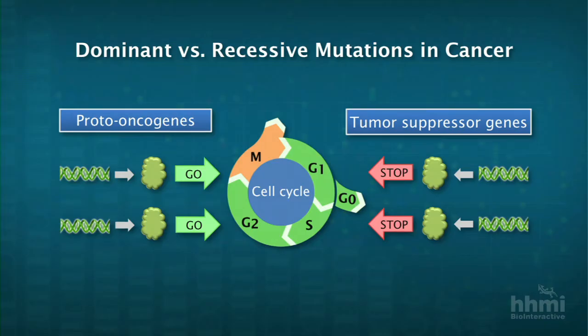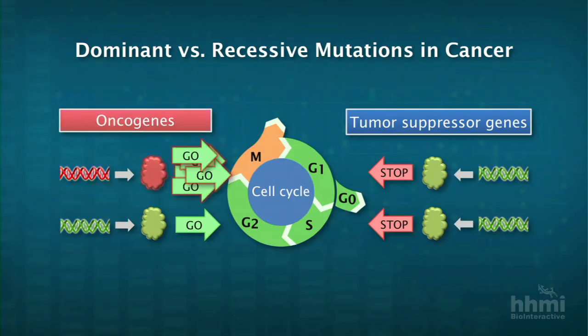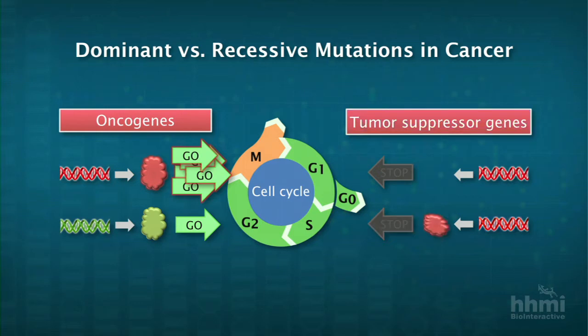You can think of this genetically. On the left-hand side, you've got two copies of a proto-oncogene. If one gets mutated, it's dominant — a mutated protein drives the cell cycle as a go signal. Whereas on the right-hand side, you have a tumor suppressor gene: one copy gets lost and there's no protein made, but the cell cycle is still okay until you lose the second copy and have a mutant or missing form of the protein, and the cell cycle proceeds inappropriately.